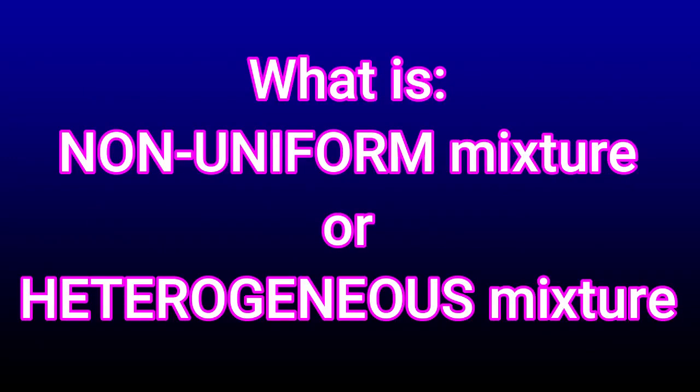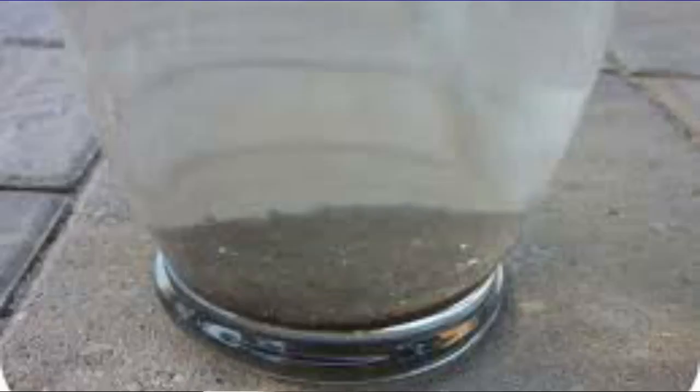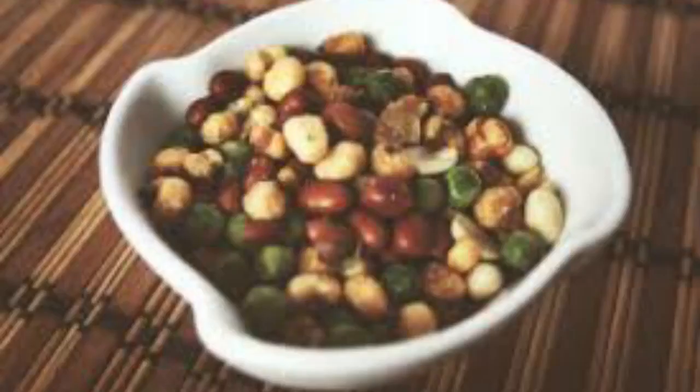What is a non-uniform or heterogeneous mixture? Non-uniform or heterogeneous mixtures are the opposite of homogeneous mixtures. In a non-uniform mixture, the components or substances mixed together are usually larger and you can still identify them because these particles are still visible to our eyes. Examples of non-uniform mixtures are sand and water suspension, and mixed nuts — a mixture of different nuts like peanuts, green peas, corn, and pili nuts.